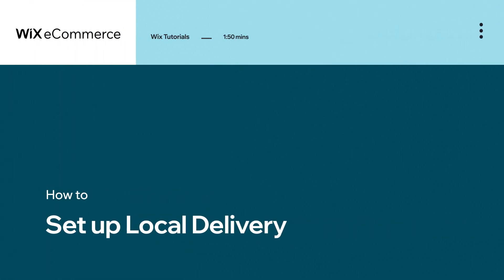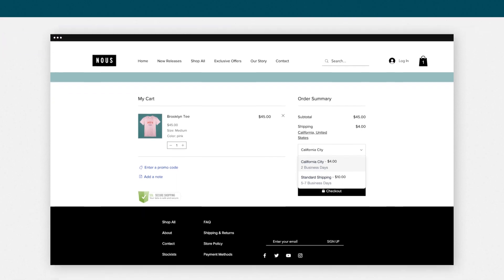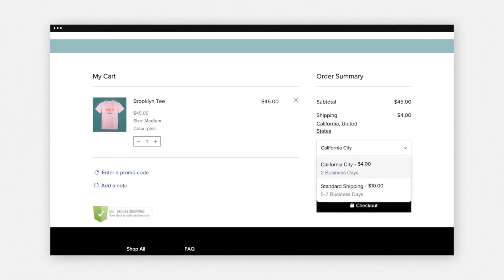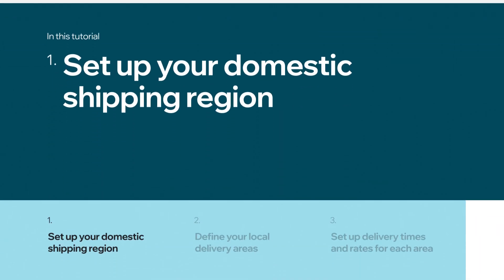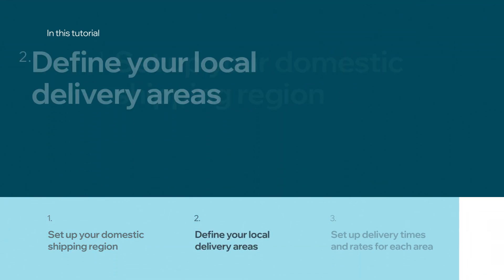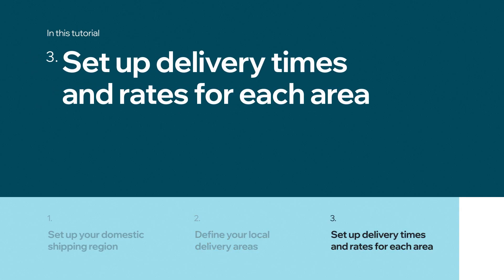In this video, you'll learn how to set up local delivery for your online store. This feature is a great way to offer customers delivery times and prices based on their location. We'll show you how to set up your domestic shipping region, define your local delivery areas, and set up delivery times and rates for each area.